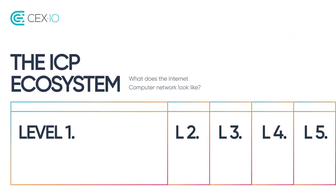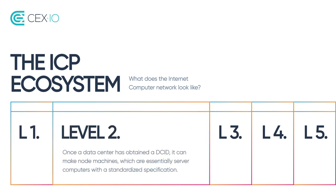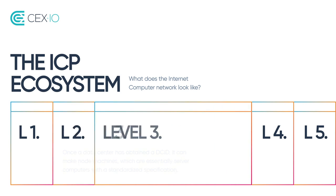What does the Internet Computer Network look like? Level 1: A datacenter gets a DCID, or datacenter identity, through an algorithmic governance system called the Network Nervous System, or NNS. Level 2: Once a datacenter has obtained a DCID, it can make node machines, which are essentially server computers with a standardized specification. Level 3: The NNS uses these computers as sub-networks that can host small contracts called canisters.